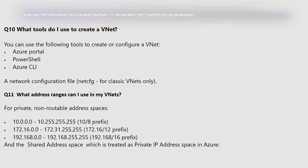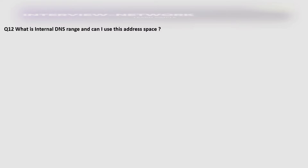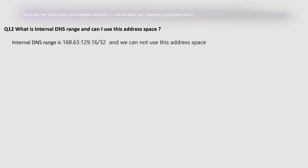The shared address space, which is treated as private IP address space in Azure, is 100.64.0.0 to 100.127.255.255 (slash 10 prefix). The internal DNS range is 168.63.129.16/32, and we cannot use this address space.